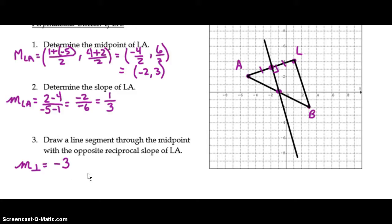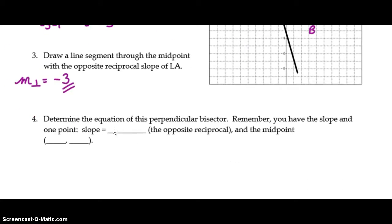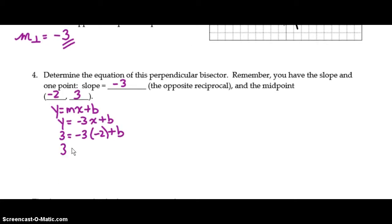So what we need to do is to find the equation of a line with that slope passing through that point. So the slope has to be negative 3, and it has to pass through the point negative 2, 3. So your slope is in for the m, negative 3. And you're going to substitute this point in for x and y. The y is 3. The x is negative 2. Negative 3 times negative 2 is 6. And if you subtract 6 from both sides, your b is negative 3. So the perpendicular bisector has an equation of negative 3x minus 3.